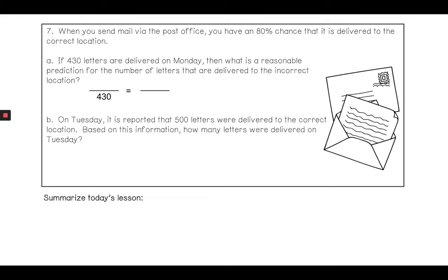We have an 80% chance out of 100 for letters that are delivered correctly. But it says specifically that we want incorrect locations. If 80% is where the correct letters go, that means 20% is where the incorrect letters are going. Then I can go ahead and cross multiply: 430 times 20 divided by 100. When I have that one finished up, I multiply and divide, and I get 86, which means of the 430 letters, 86 of them will be delivered incorrectly.